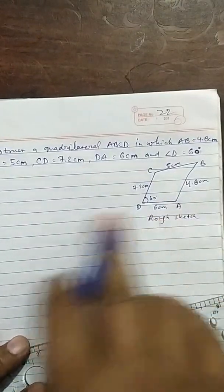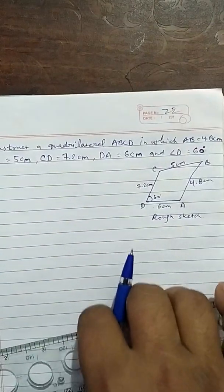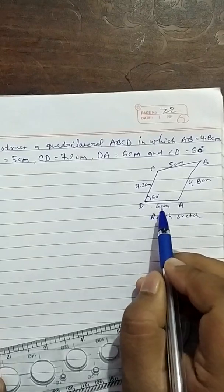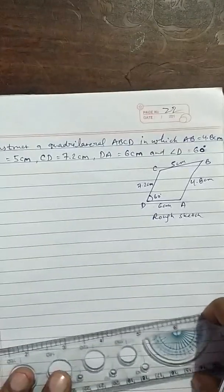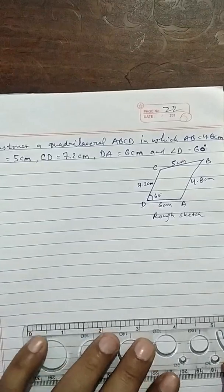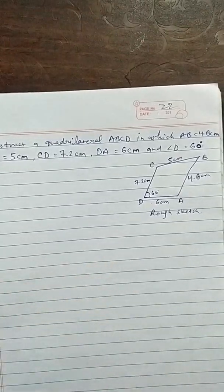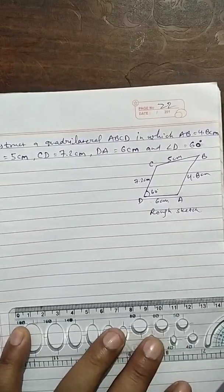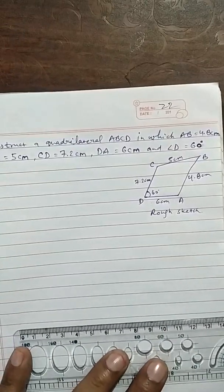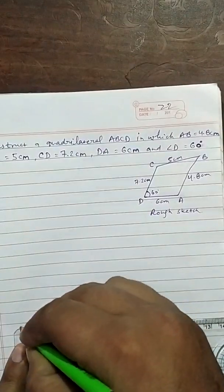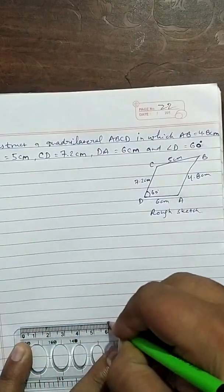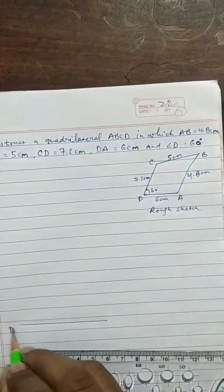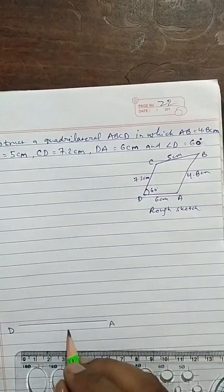According to this, we have to draw the fair sketch. So first of all, we will take this baseline, DA, 6cm. From 0 to 6, this is DA, 6cm.